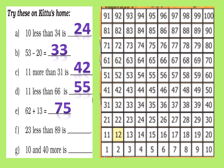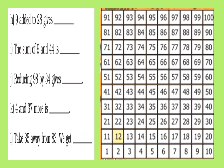For 23 less than 89, look at the number 89. Jump two rows down and then three steps towards the left — we reach 66. For 9 added to 28, look at 28. To add 9, first we can add 10: jump one row above, then one step towards the left, which gives us 37.